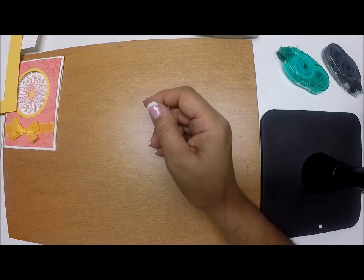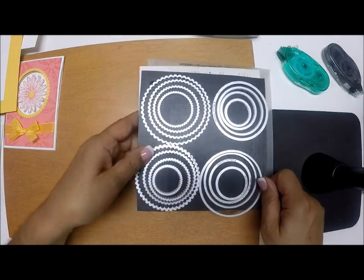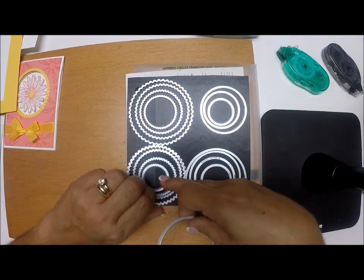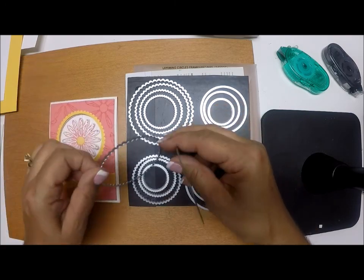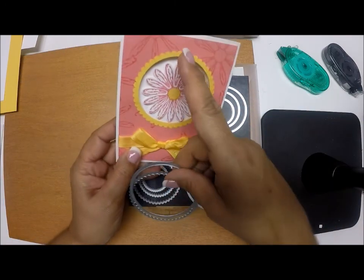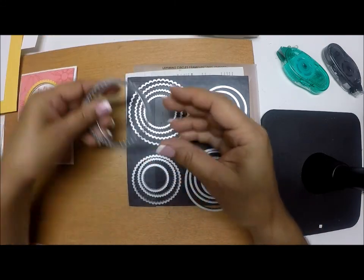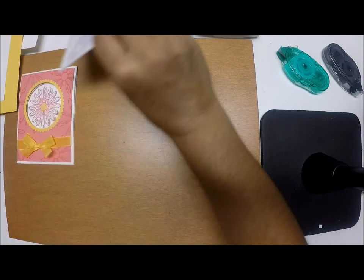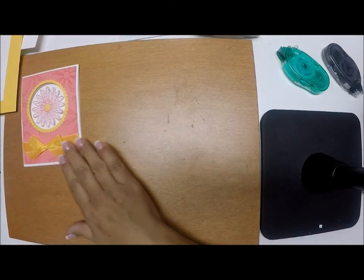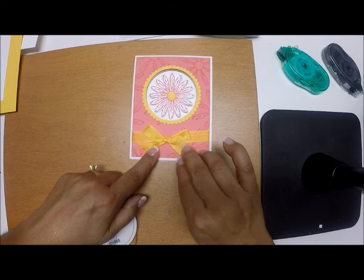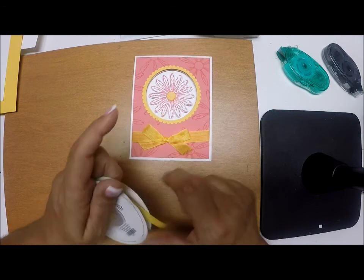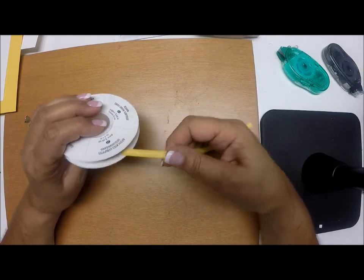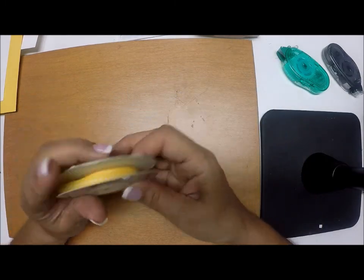We're also going to use the layering circles framelits. I used the second largest circle and the second largest scallop to make my frame there. Then we need some Stampin' Dimensionals. For this one, the ribbon I used was Daffodil Delight seam binding, but I finally ran out of it. So I'm going to make this one using the Daffodil Delight striped crossgrain ribbon.